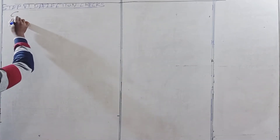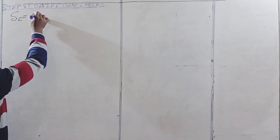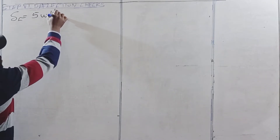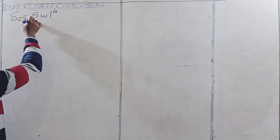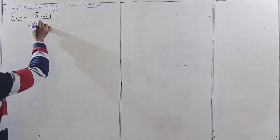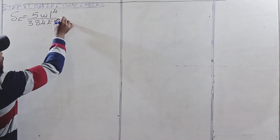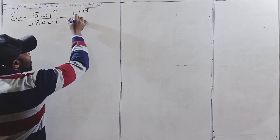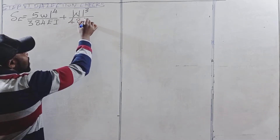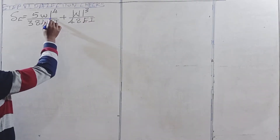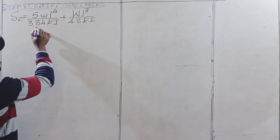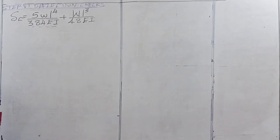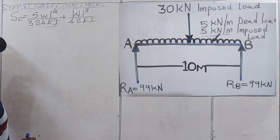The sixth step is deflection checks. The central deflection will be given by 5WL raised to the power of 4 over 384EI, plus WL cubed divided by 48EI. The first term, 5WL raised to 4 over 384EI, is the deflection due to the UDL — the imposed load of 5 kN per meter.